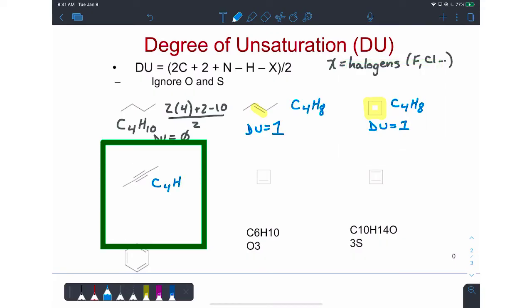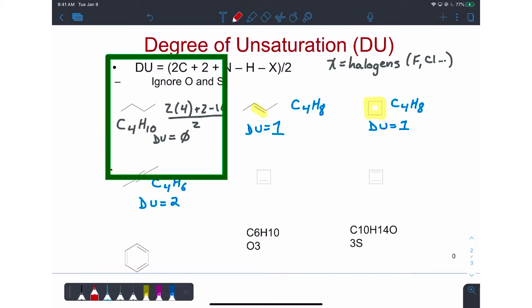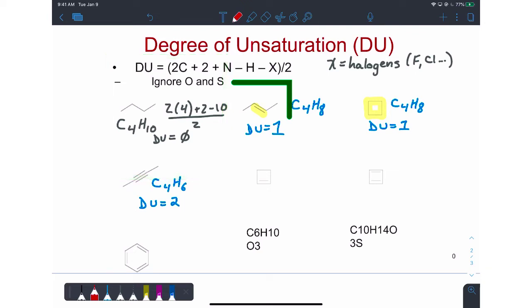Let's consider 2-butyne next, C4H6. The degree of unsaturation is 2. A take-home message is that if a compound is completely saturated, it will have a degree of unsaturation of 0. Each pi bond adds one degree of unsaturation. Each ring adds one degree of unsaturation. Two pi bonds in the alkyne, two degrees of unsaturation.